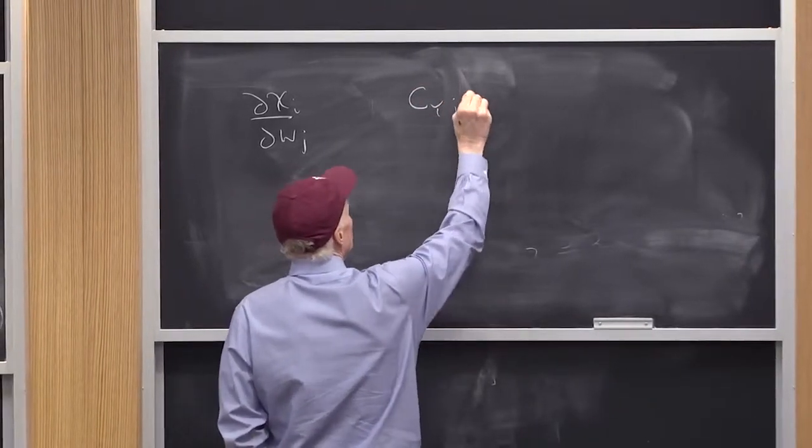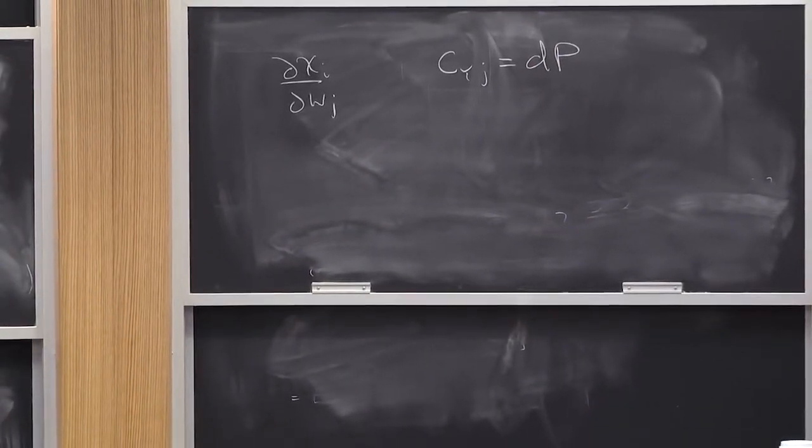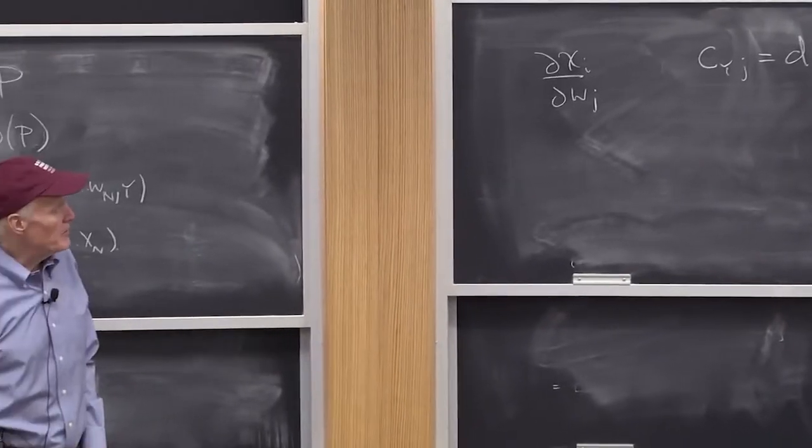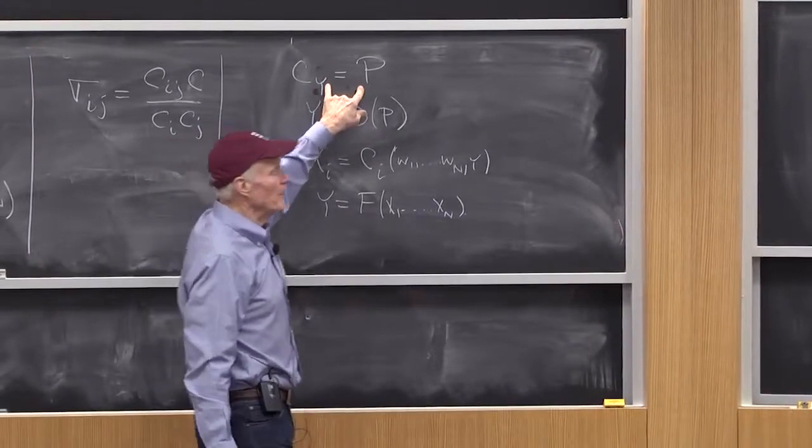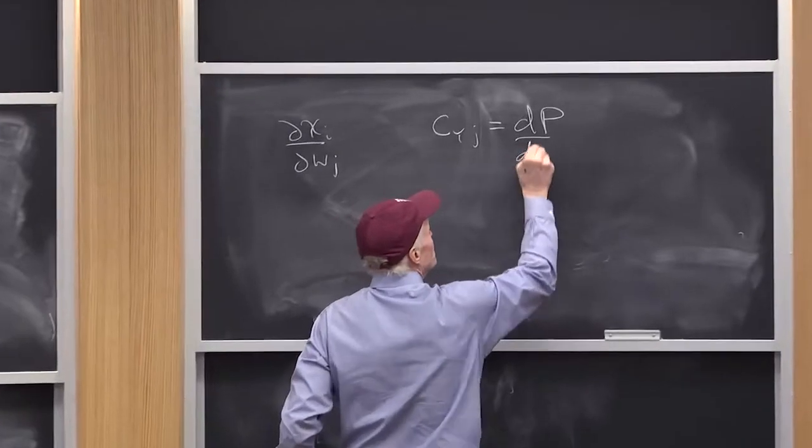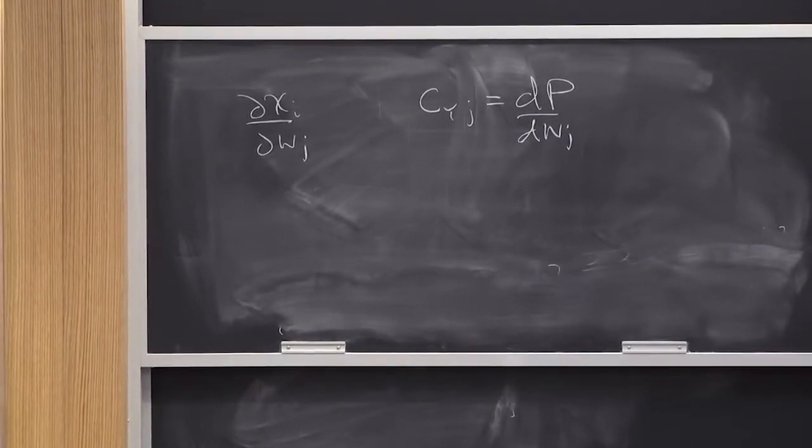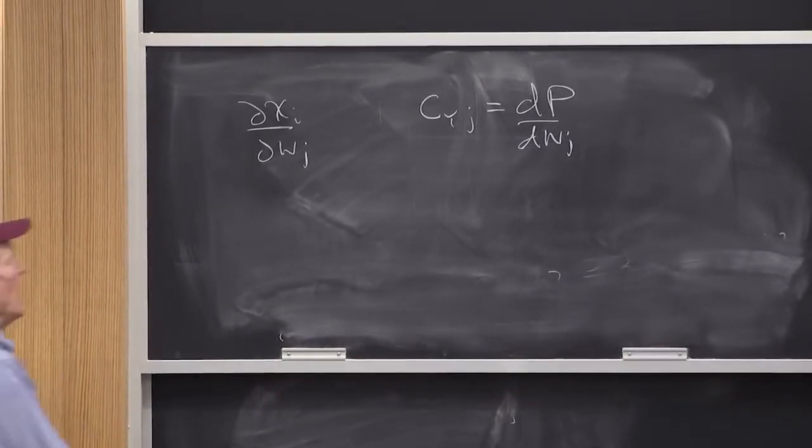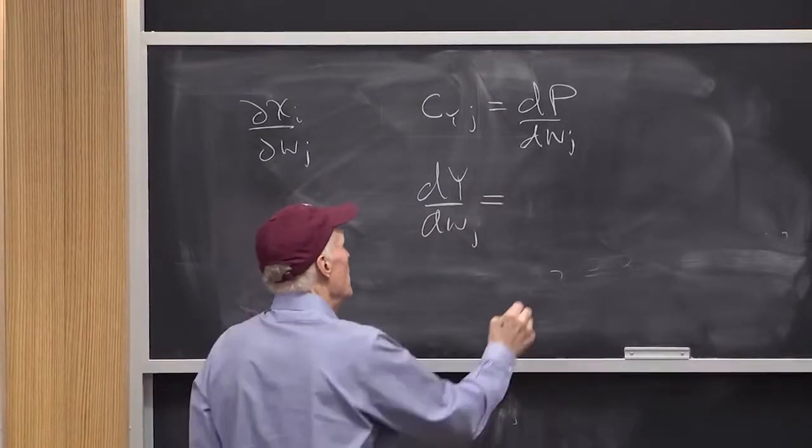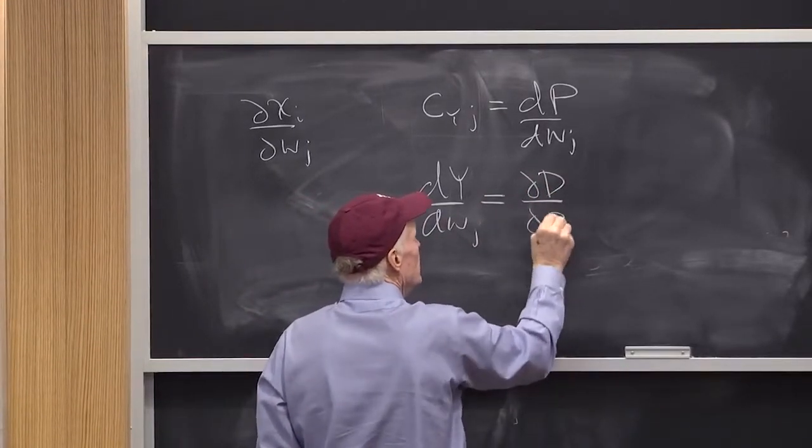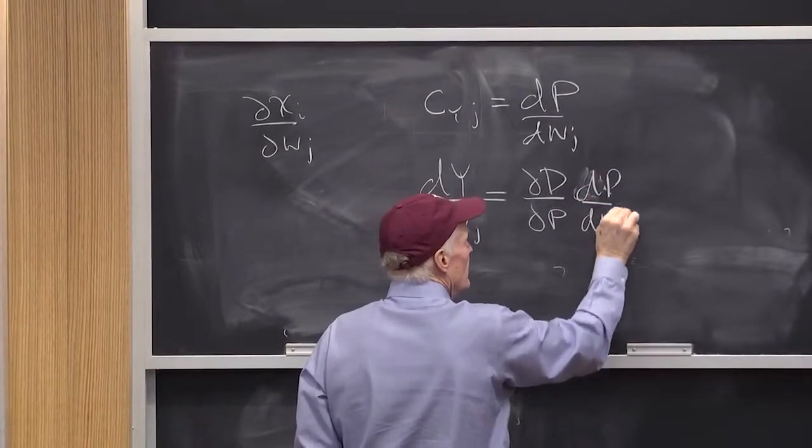This first equation would be cyj equals dp. That is, as I change the price of factor j, the change in price has to obey this equation. So cyj has to be equal to times dp, dwj. So that's going to be the change in price.